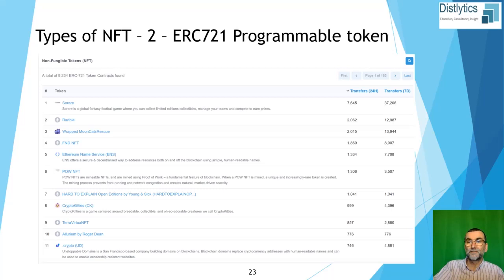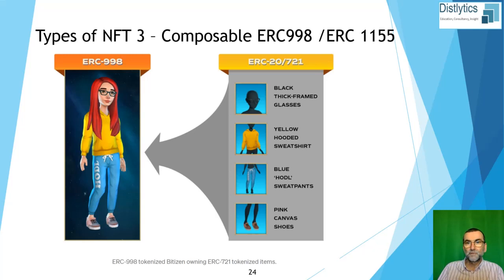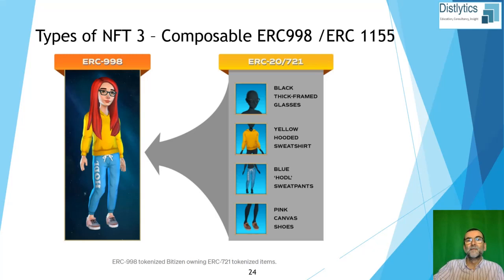The third type of NFT is known as a composable token. Based on the ERC-998 standard, it allows you to group fungible tokens — such as the token used for fundraising, what we used to call ERC-20 — with non-fungible tokens, and they can be traded as a single parcel rather than individually. This means you could have pieces of digital art inside a virtual house inside a computer game and trade all of them as a single unit. They're certainly seen as the next big thing in gaming, and there's another standard, ERC-1155, which may gain traction outside of gaming as well.